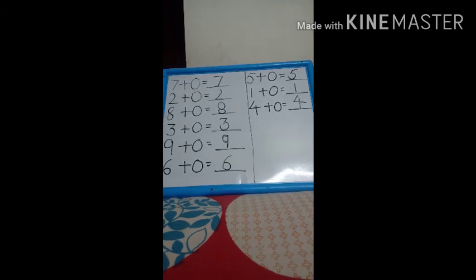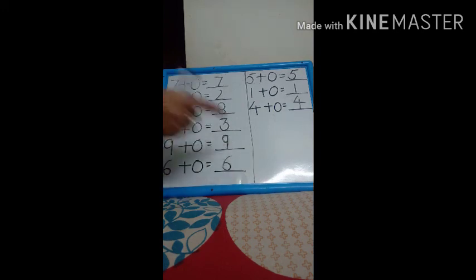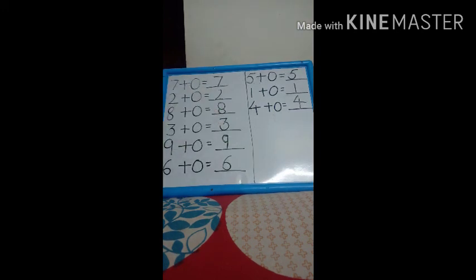Like nine plus zero is nine. Six plus zero is six. Three plus zero is three. Eight plus zero is eight. Two plus zero is two. Seven plus zero is seven. Five plus zero is five. One plus zero is one. And four plus zero is four. Okay? The same answer will come.